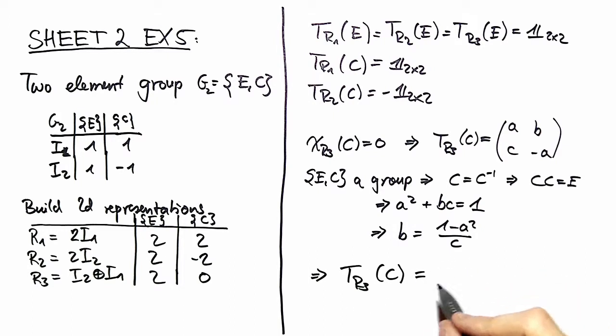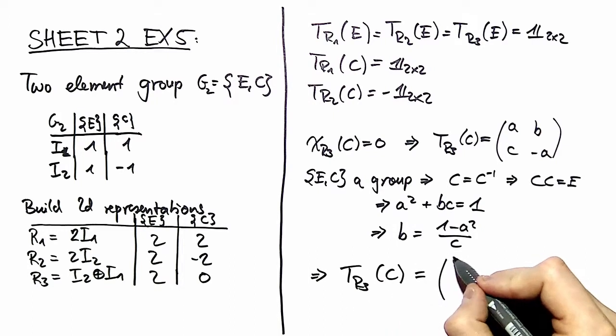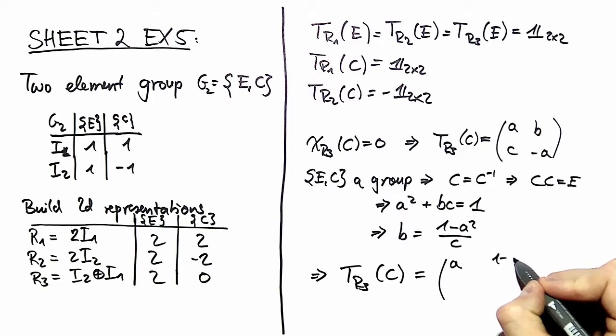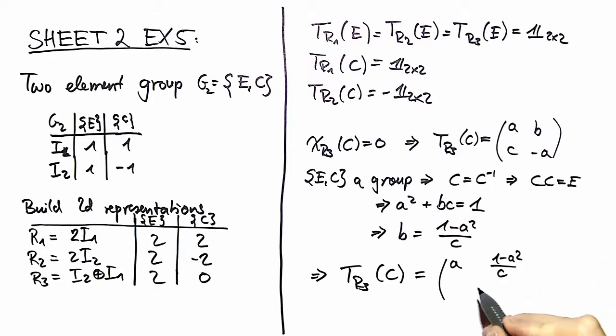And therefore, the matrix representation of our element C in our representation R3 is: A, (1 minus A squared) over C; C, minus A.